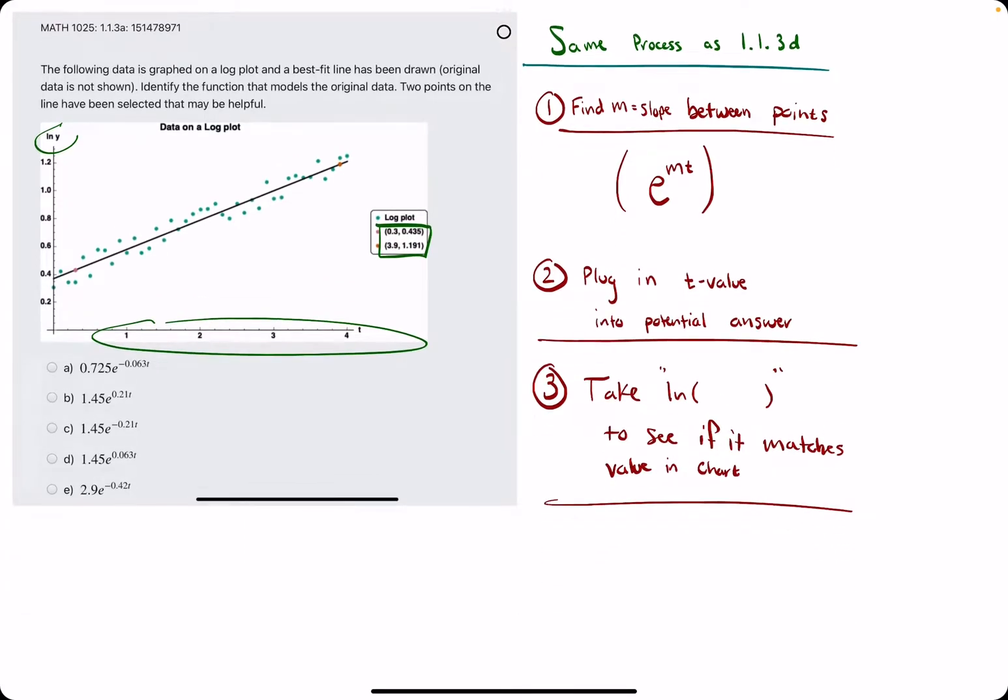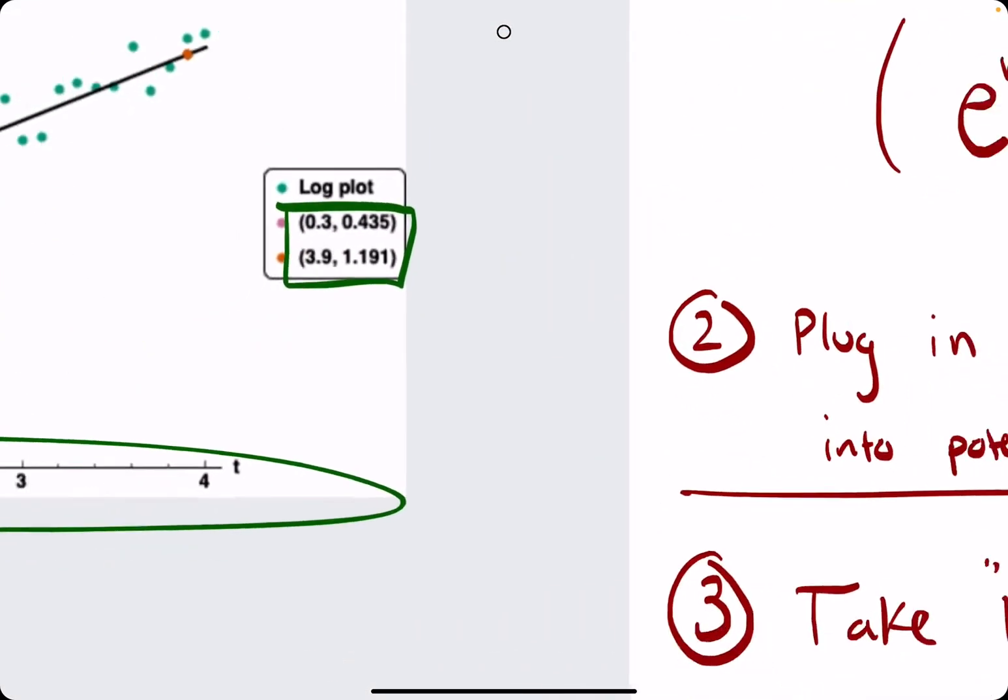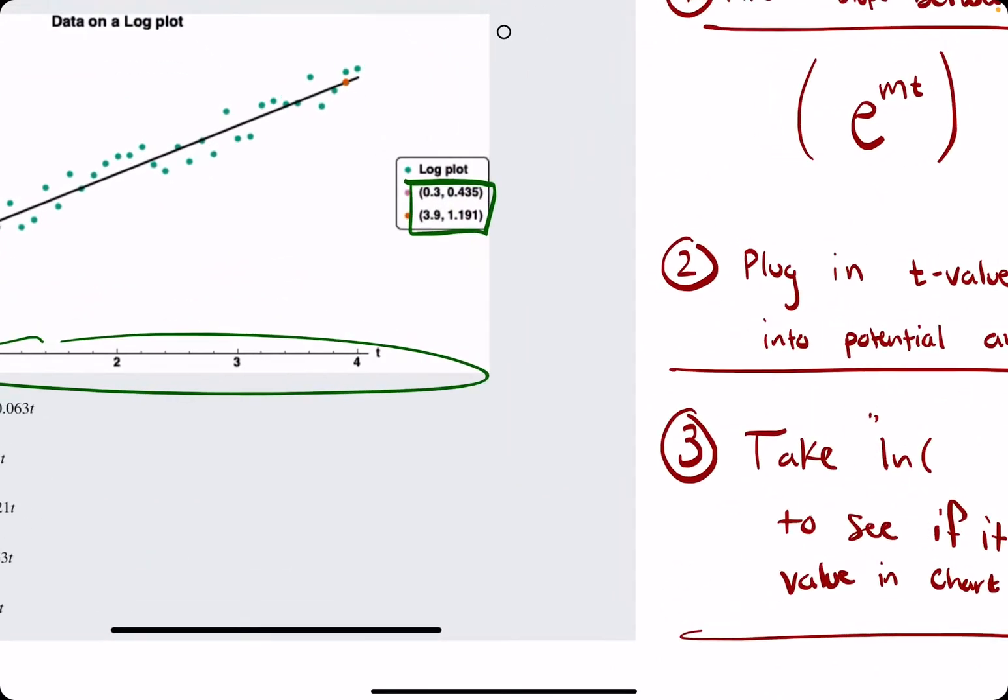We're finding the slope between these two points. We will simply take y2, 1.191, and subtract it by y1, 0.435. And we will divide this by the change in x values, 3.9 minus 0.3.